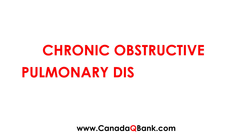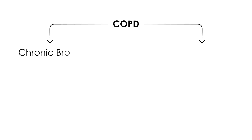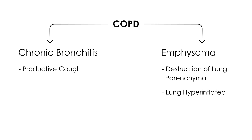Chronic obstructive pulmonary disease, or COPD, essentially comprises two components: chronic bronchitis and emphysema. Chronic bronchitis is a presentation of productive cough on a chronic basis, whereas emphysema refers to destruction of the lung parenchyma. Over time, this can cause the lung to become hyperinflated due to air being trapped inside. The most common reason a person develops COPD is smoking.